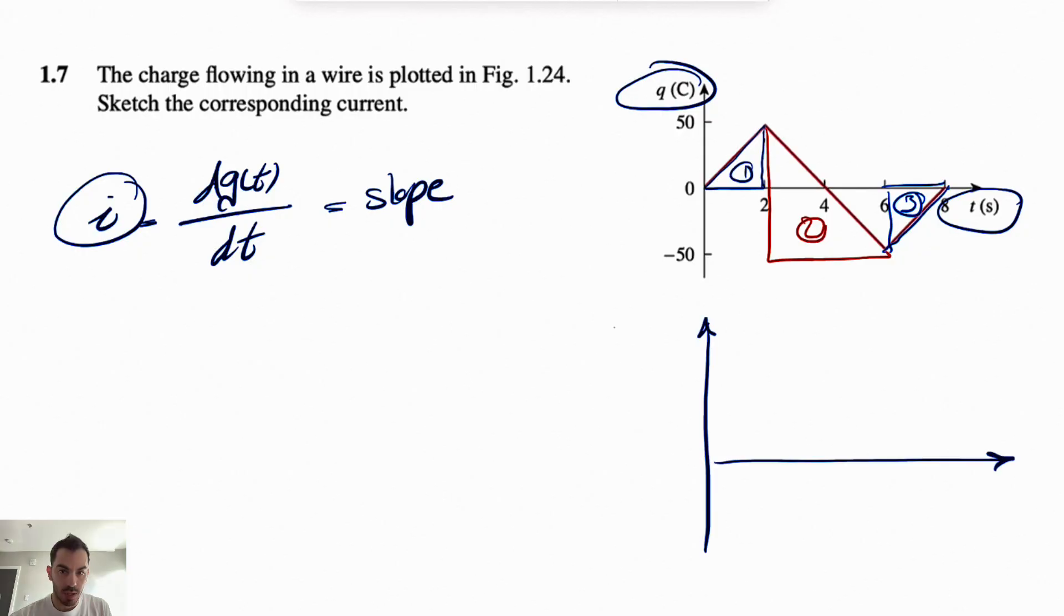So I'm just going to show our graph in here. So we're going to have i, and we're going to have time in seconds. So as I mentioned, we're going to have three regions: 0 to 2, 2 to 6, and 6 to 8. Alright, let's just figure out each of them.